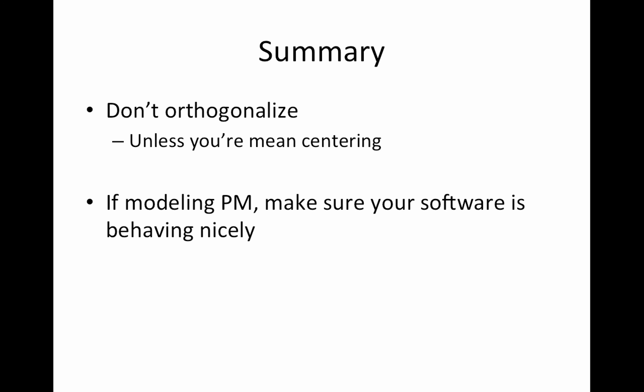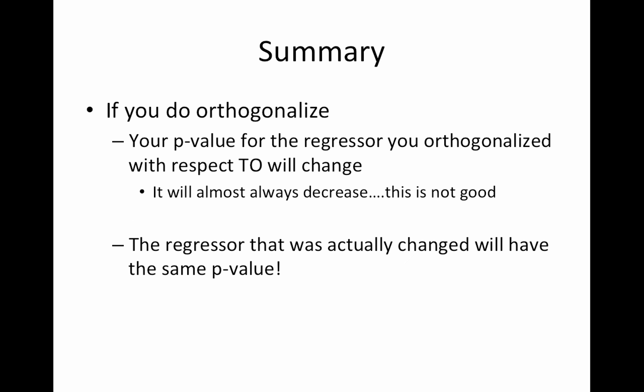In summary: don't orthogonalize unless you're mean-centering. Mean-centering applies to parametric modulation as well - in that context, you're fine. But if you're using automatic orthogonalization for parametrically modulated regressors, make sure your software is doing what you want. If you do orthogonalize, the p-value for the regressor you changed won't change, but the regressor you orthogonalized with respect to will change - its p-value will almost always decrease, and although it feels good, it's not good. The regressor that was actually changed will have exactly the same p-value and parameter estimate. Thanks and have a great day.